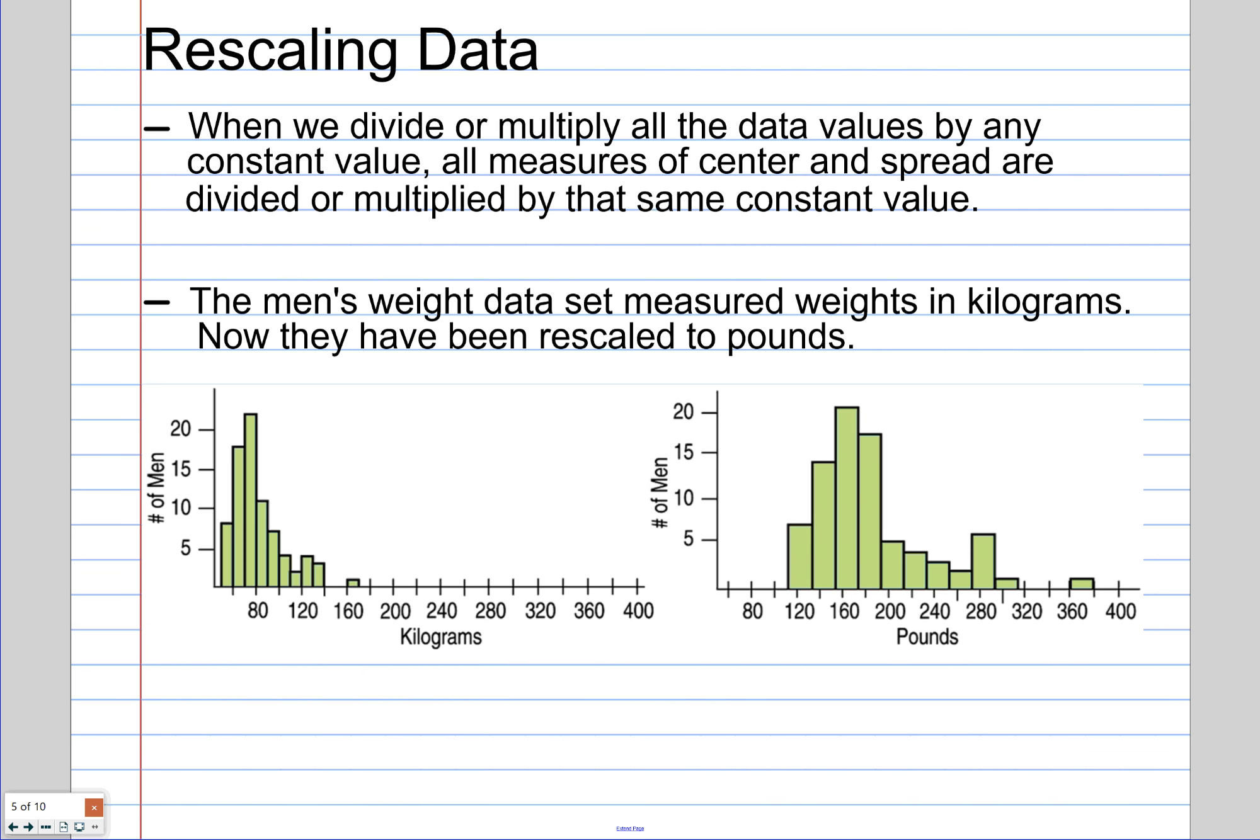Now the other way we can do this is to rescale the data by multiplying or dividing by a number. If we multiply or divide all of your data values by the same number, then you're going to change everything. Measures of center will change as well as measures of spread. So that idea that some things didn't change, that's not happening when you multiply or divide all of your data values by a constant. So everything changes.